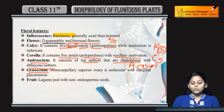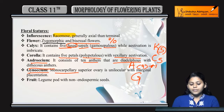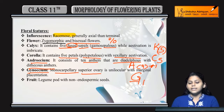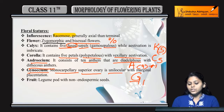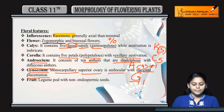Gynoecium: it is monocarpellary, denoted by G as the female part. It is monocarpellary, meaning one carpel is present. The ovary is superior, so G is underlined. It is unilocular with marginal placentation.